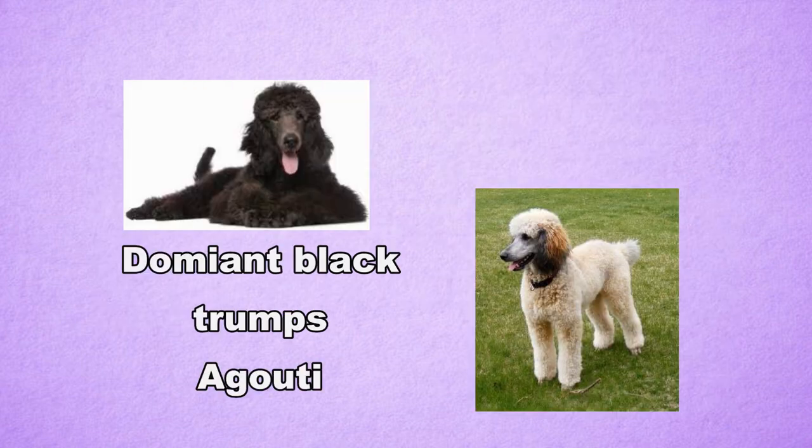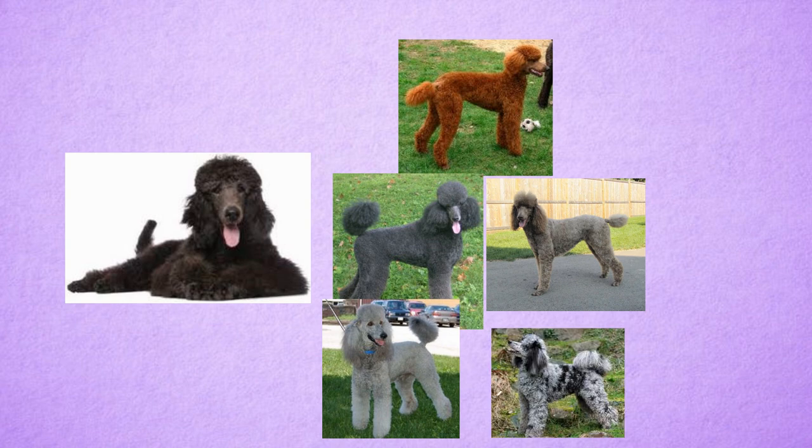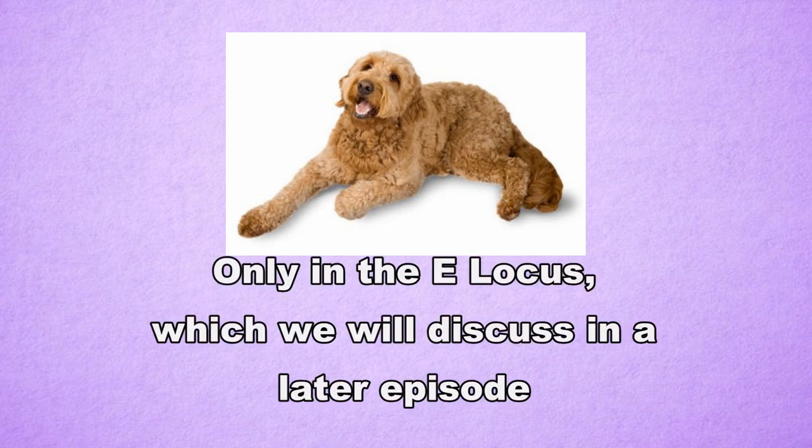Dominant black dominates over the A-locus, but dominant black can be modified by other genes like liver, dilution, graying, and merle. All of these genes will alter the way the black dog would look, but they cannot add red to the coat. The only way red can be added to the coat of a dog with dominant black is through a gene located in the E-locus called recessive red. This would mean a dominant black dog, or any dog, would be turned into a solid red dog with a black nose.